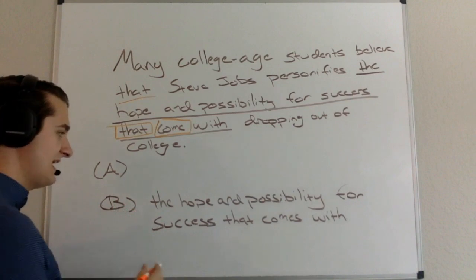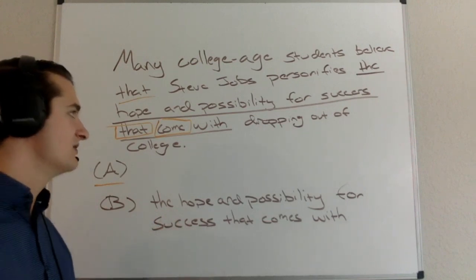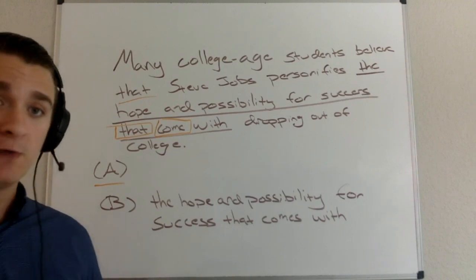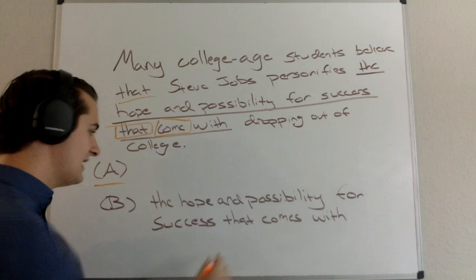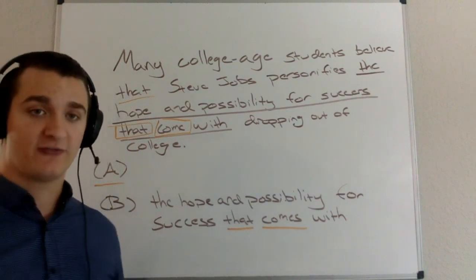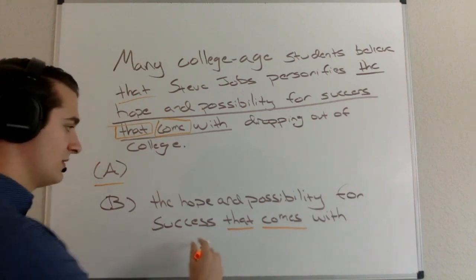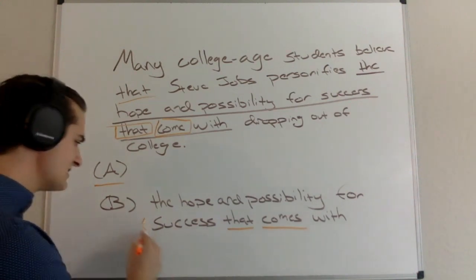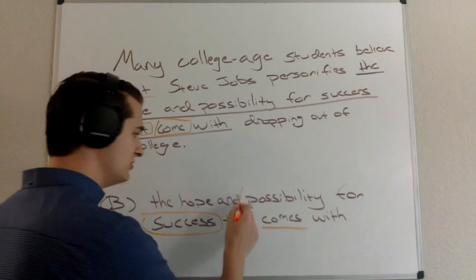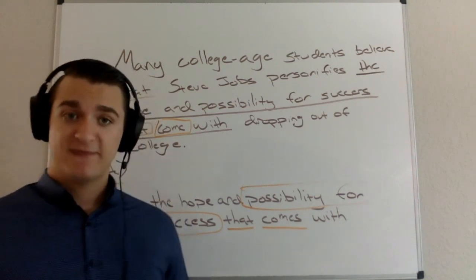Looking at B: 'the hope and possibility for success that comes with dropping out of college.' If you're like me, that sounds a lot better to your ear — but we don't want to use your ear here. I've got 'that comes' — 'comes' is the singular form of the verb. So 'that' must refer to something singular before it. What could that be? It could probably refer to 'success' — 'success that comes with dropping out of college.' It could also probably refer to 'possibility for success' — 'possibility for success that comes with dropping out of college.' Both of those seem fine initially.